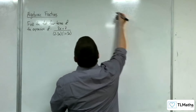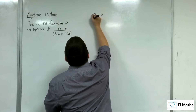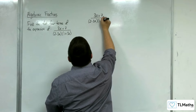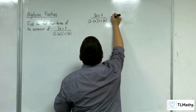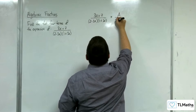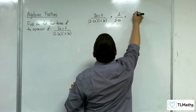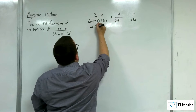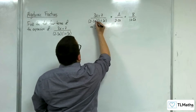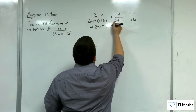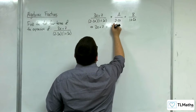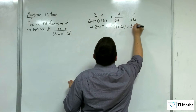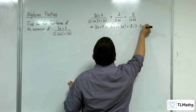So (3x + 7) over (2 − 3x)(1 + 3x) is going to be equivalent to A over (2 − 3x) plus B over (1 + 3x). Multiplying up by (2 − 3x)(1 + 3x), we get that 3x + 7 is equivalent to A(1 + 3x) + B(2 − 3x).